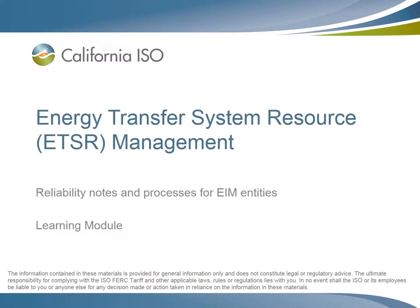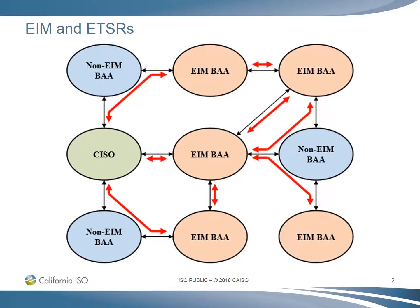This is a California ISO learning burst on energy transfer system resource or ETSR management for EIM entities. One of the most important components of the energy imbalance market is the ability to transfer energy between the different EIM participants. These transfers allow the market to optimize the energy mix and are called energy transfer system resources, or ETSRs.